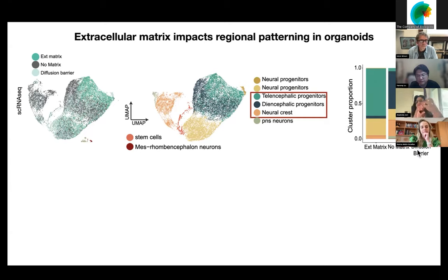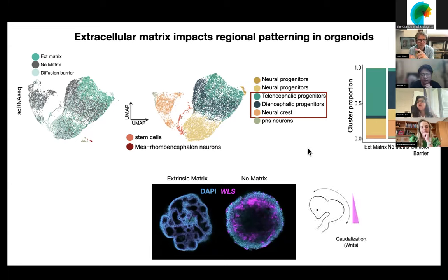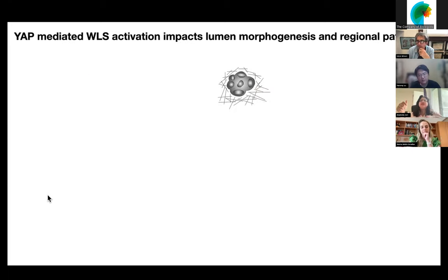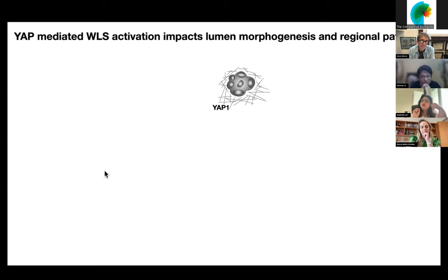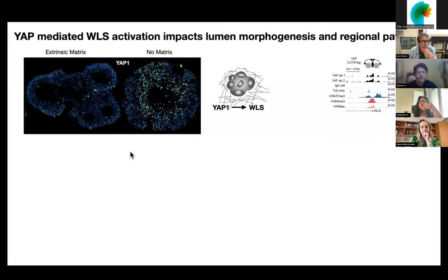The no-matrix organoids showed diencephalic and neural crest cells, and agarose showed an in-between situation making both diencephalic and telencephalic progenitors. One of our top differentially expressed genes in this analysis was Wntless, a Wnt ligand secretion mediator required for secretion of Wnt proteins. Wnt is well known to be involved in caudalizing the developing embryo or brain. We did find that Wntless is really high in organoids never exposed to any matrix. To understand how matrix change and tissue morphology change could be linked to patterning, we looked at YAP, a very well-studied mechanotransducer involved in sensing the extracellular matrix microenvironment, tissue density, and mechanical properties of tissue. It was known that in mouse cardiac progenitors, YAP1 directly upregulates Wntless.